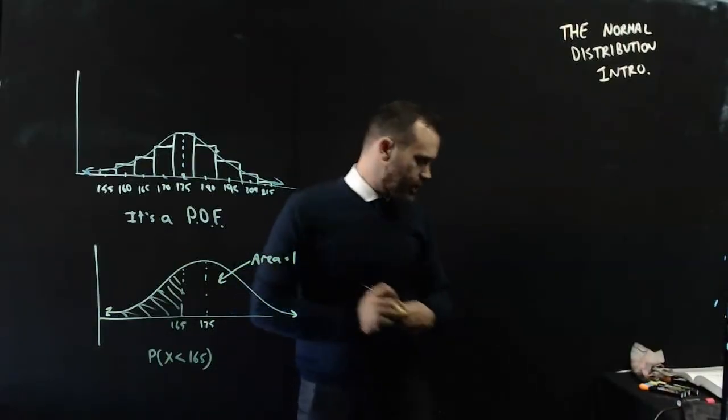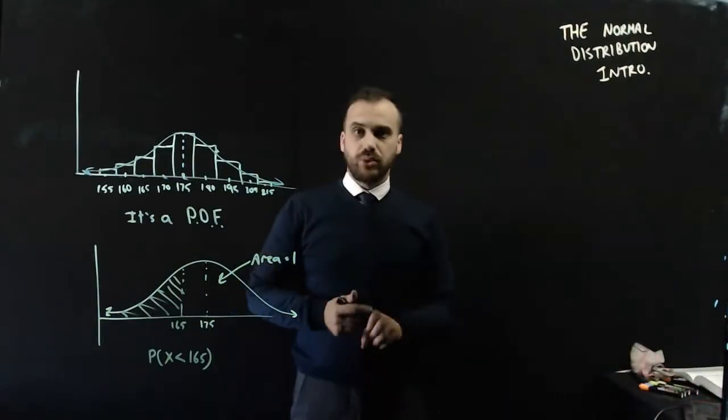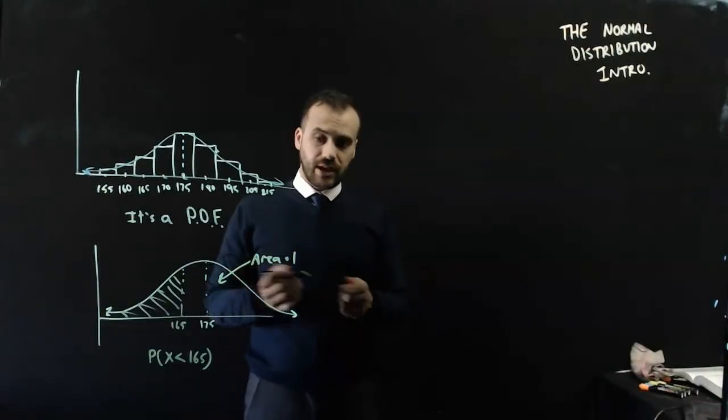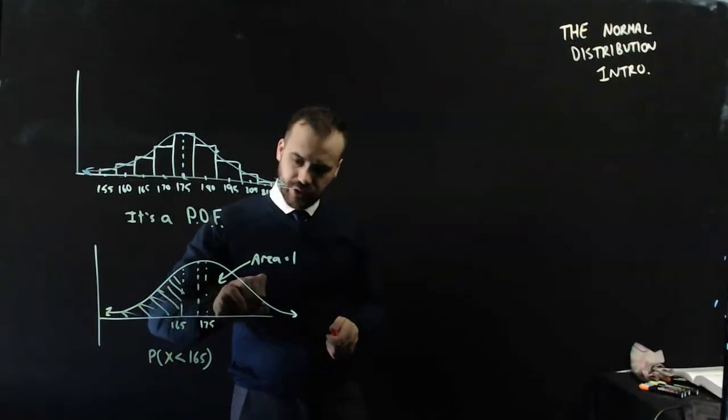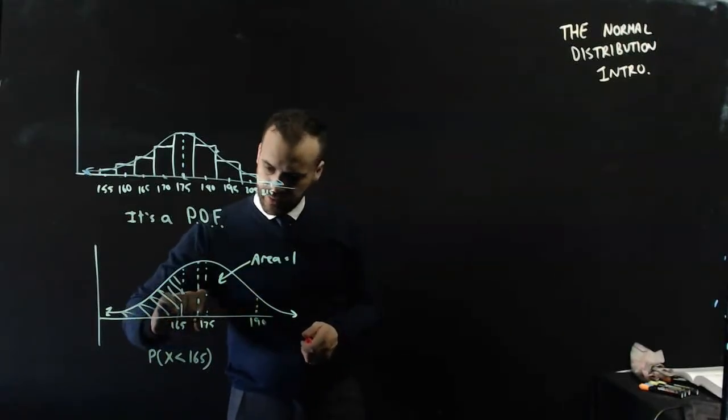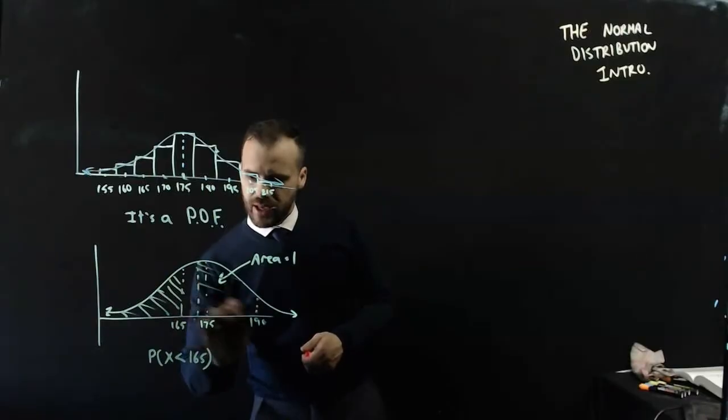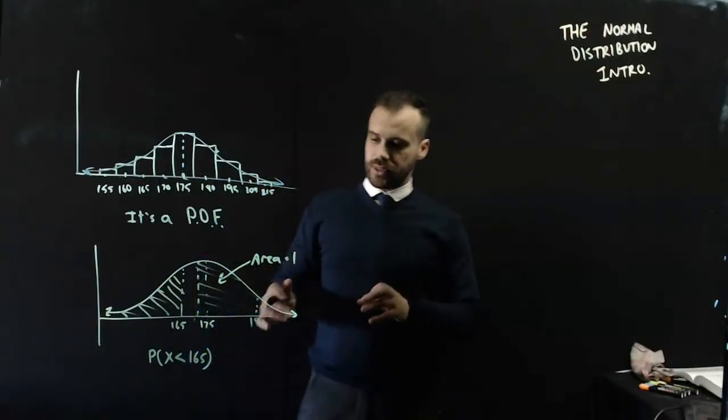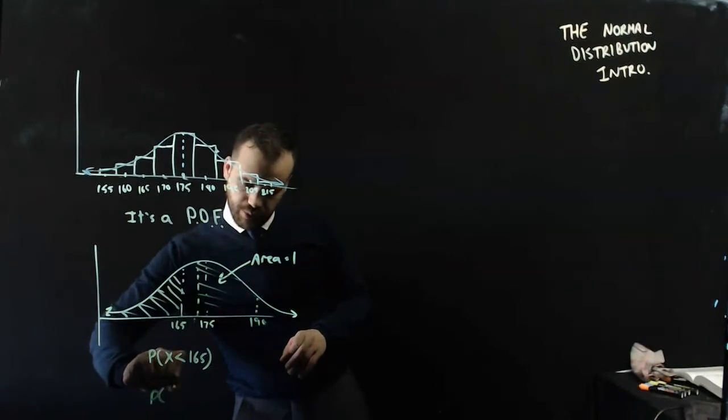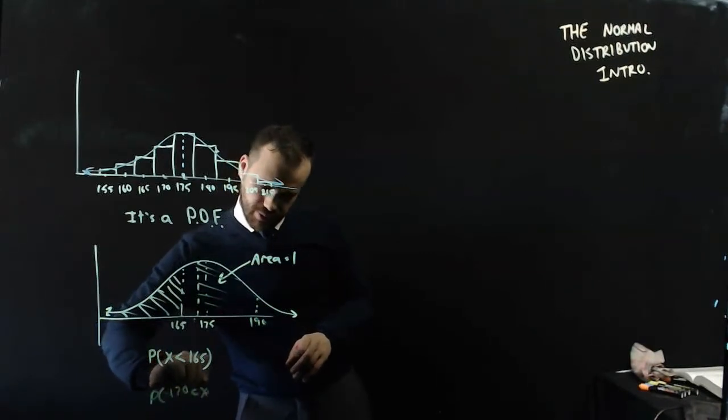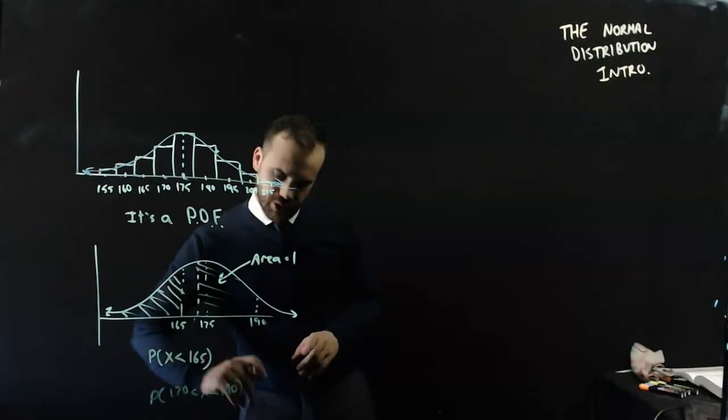If you want to know the probability of them being, say, between 170 and 190, then we could put in a line there at 170, put a line here at 190, there. And we could find that area there, and that would give us the probability of them being between 170 and 190cm.